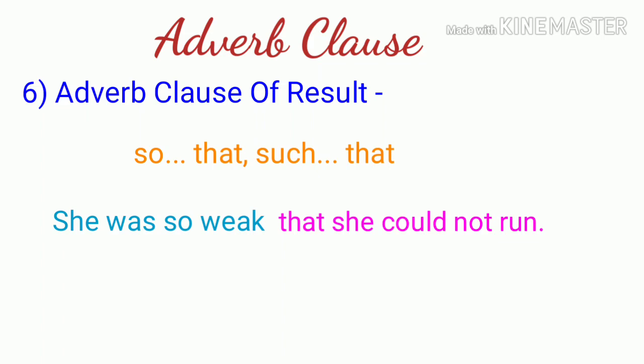The next type is adverb clause of result. For example: 'She was so tired that she could not run' - 'that she could not run' - meaning 'she could not run' - is an adverb clause of result.